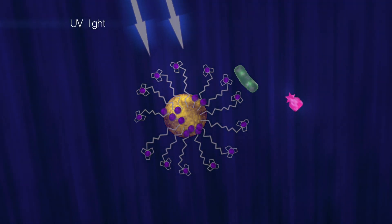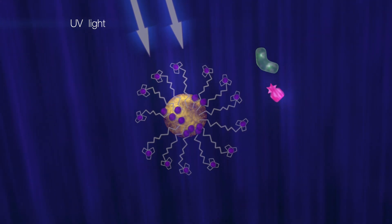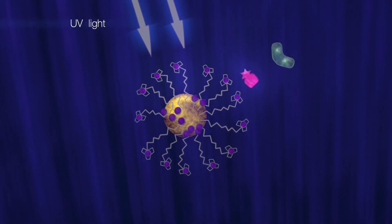Upon irradiation of the hydrogel with light, azobenzene changes shape and is liberated from the nanoparticles. This allows the substrate to bind to the nanoparticles and catalysis starts.